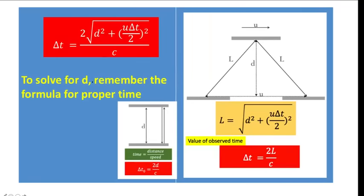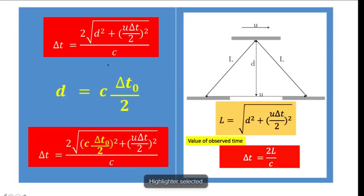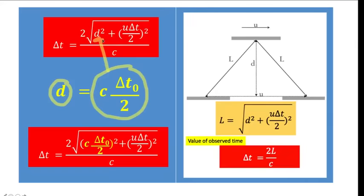Since d = c·delta t₀ / 2, we substitute this into our formula. The expression becomes: delta t = 2·√((c·delta t₀/2)² + (u·delta t/2)²) all over c. We now have delta t expressed in terms of delta t₀ and the other known quantities. To eliminate the square root, we square both sides of the equation.